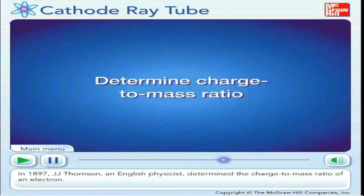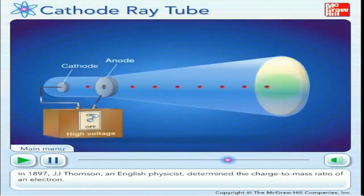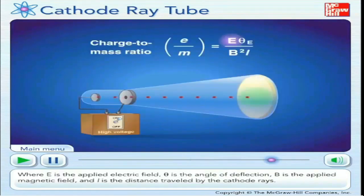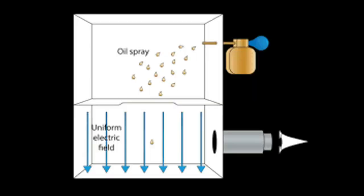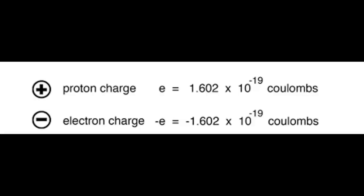Three, Thomson also established the charge-to-mass ratio of the electron. In 1909, Robert A. Millikan and Harvey Fletcher performed the famous oil drop experiment, where they found the value of the charge of the electron to be integral multiples of 1.602176634 × 10⁻¹⁹ C.